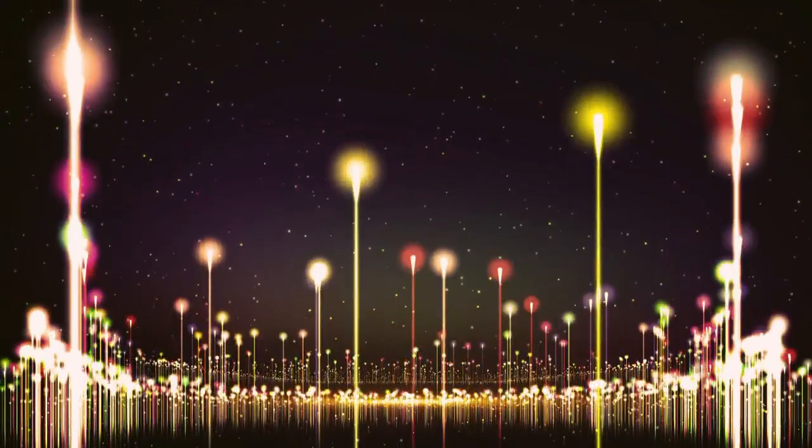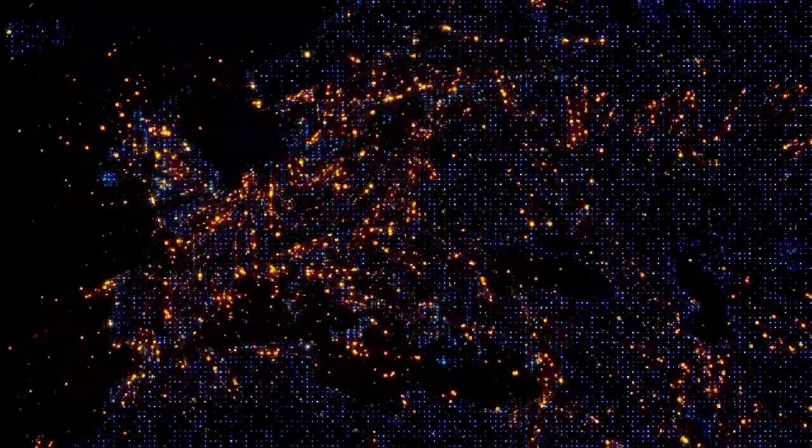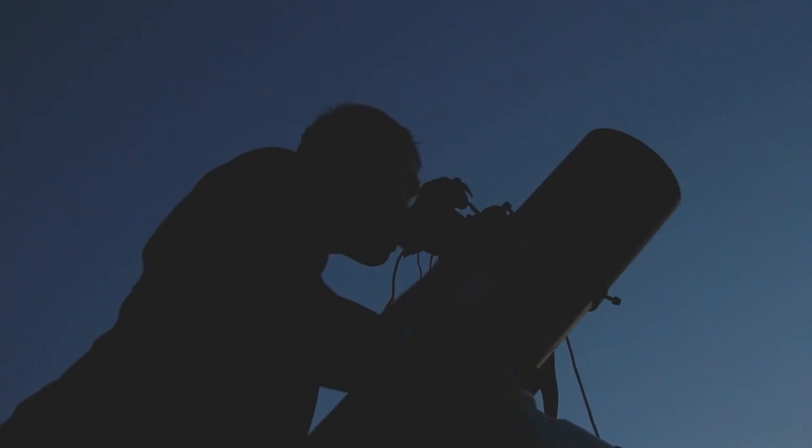Hycean worlds may also represent a sweet spot in the search for extraterrestrial life. Because of their large size and relatively frequent occurrence in the galaxy, they are easier to detect than Earth-sized planets. Their extended habitable zones, made possible by heat-trapping hydrogen atmospheres, mean they may be far more numerous than previously assumed. In fact, some astronomers believe Hycean planets could be among the most common types of habitable worlds in our galaxy.